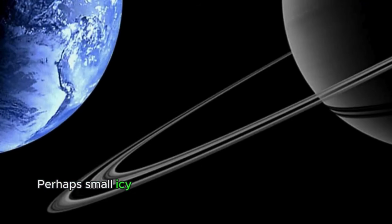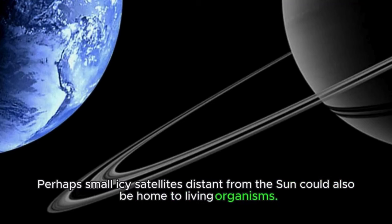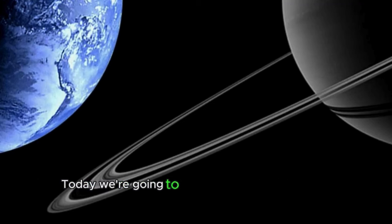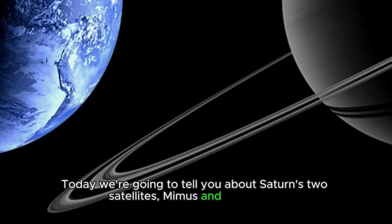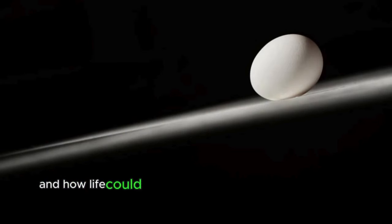Perhaps small icy satellites distant from the Sun could also be home to living organisms. Today, we're going to tell you about Saturn's two satellites, Mimas and Enceladus, and how life could potentially thrive on seemingly lifeless satellites.